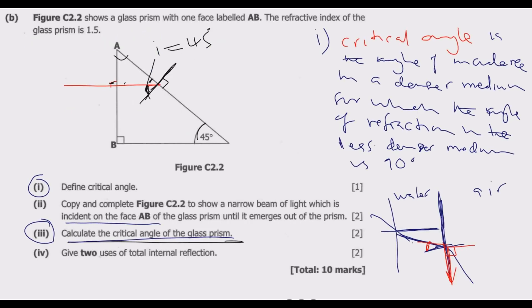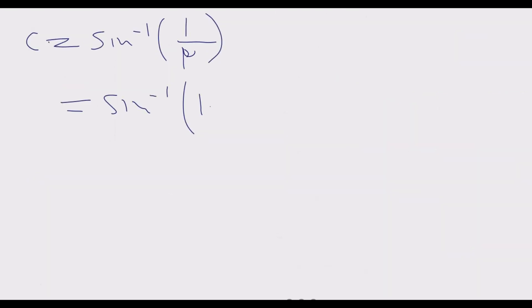Using our calculator, we discover that the answer will be 41.81 degrees. So 41 degrees is the critical angle. The incident angle is 45 degrees. This tells us the critical angle is less than the incident angle, which means we're going to have total internal reflection.